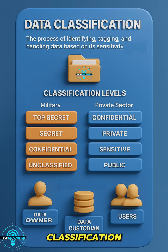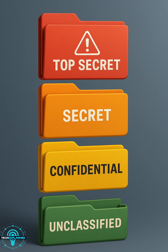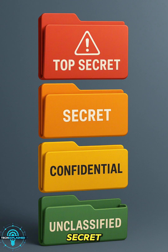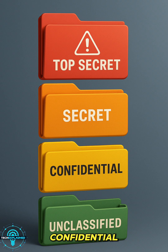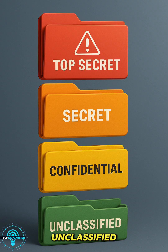Common classification levels — let's break it down. For government or military: Top Secret — if leaked, we're talking serious national damage. Secret — still bad, just not catastrophic. Confidential — could cause some harm, but not the end of the world. Unclassified — pretty safe to share publicly.